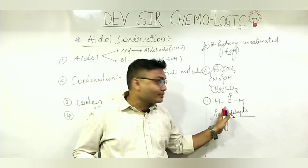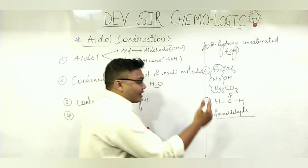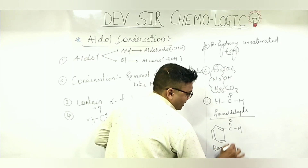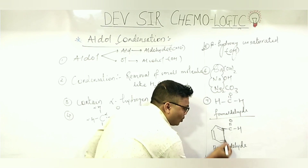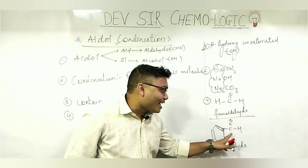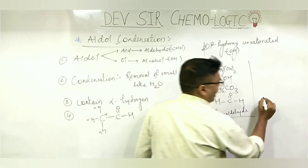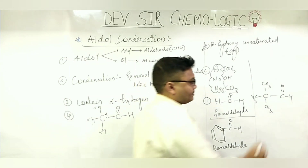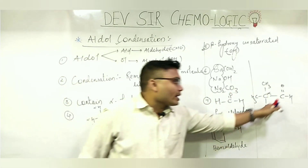Next example is benzaldehyde — C₆H₅-CHO, C double bond O-H. In benzaldehyde, the ring carbons are all bonded to each other: 1, 2, 3, 4 — the ring is complete. There is no alpha hydrogen. That is why benzaldehyde also cannot undergo aldol condensation.